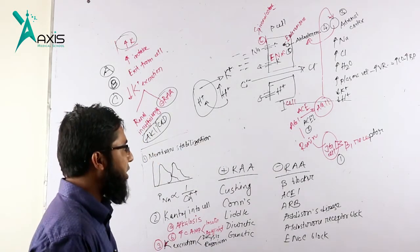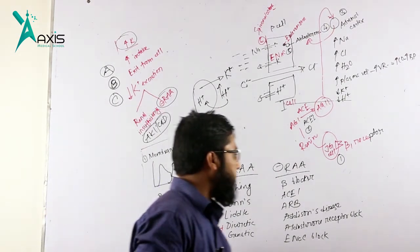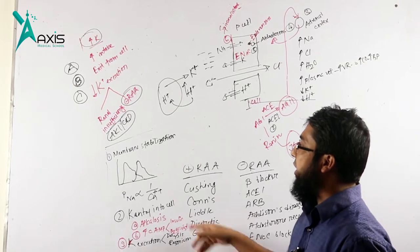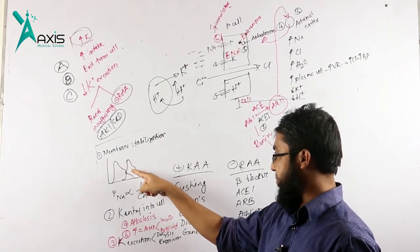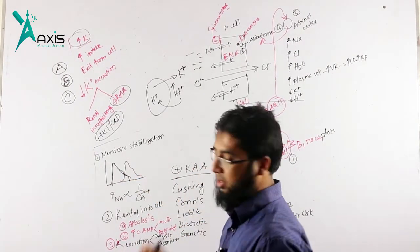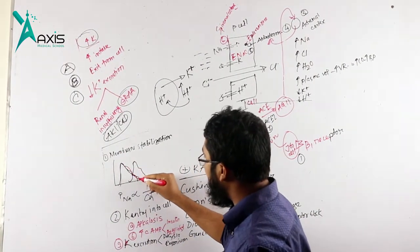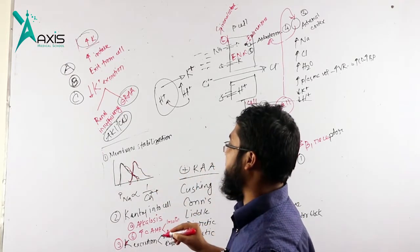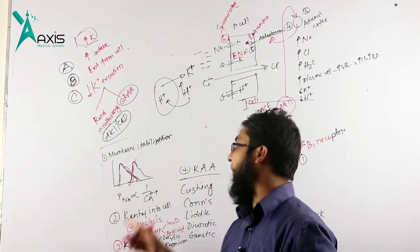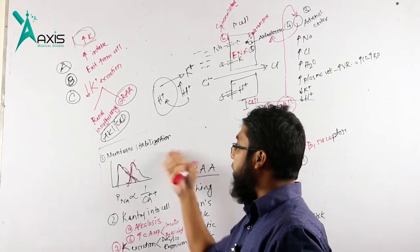So these are the hyperkalemia causes. Now, how to manage hyperkalemia and why is hyperkalemia dangerous? Potassium is responsible for repolarization. This is depolarization and this is repolarization. When potassium level is very high, repolarization is prolonged and another depolarization starts before complete repolarization. This creates arrhythmia which is very toxic for the heart. How to combat this?